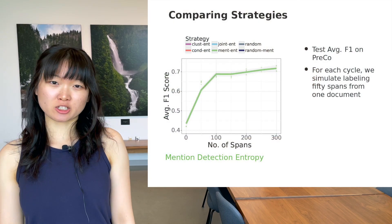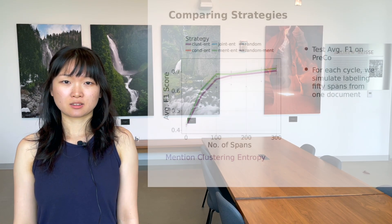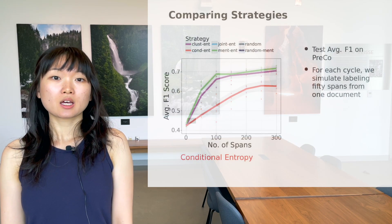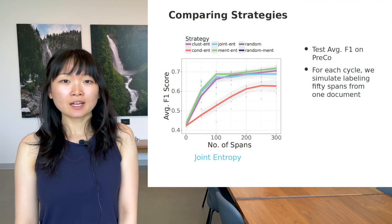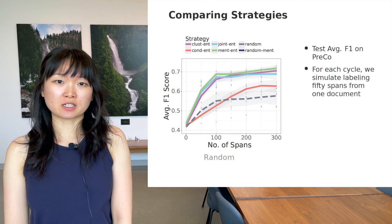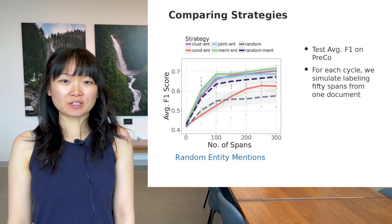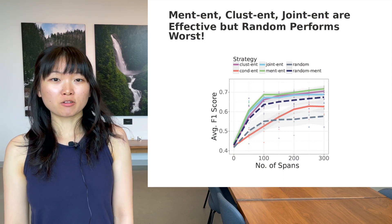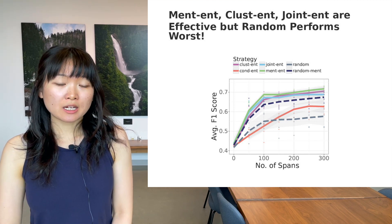Mention detection entropy shows an average F1 score of about 0.73 by the end of the simulation. Mention clustering entropy shows similar behavior. Conditional entropy shows a drop in accuracy. Accuracy jumps back up again with joint entropy. Random sampling performs even worse than conditional entropy. Finally, sampling random entity mentions is stronger than pure random sampling, but still not as great as the other active learning strategies. Overall, we see high average F1 scores from mention detection entropy, mention clustering entropy, and joint entropy. As predicted, pure random sampling hurts the model the most.